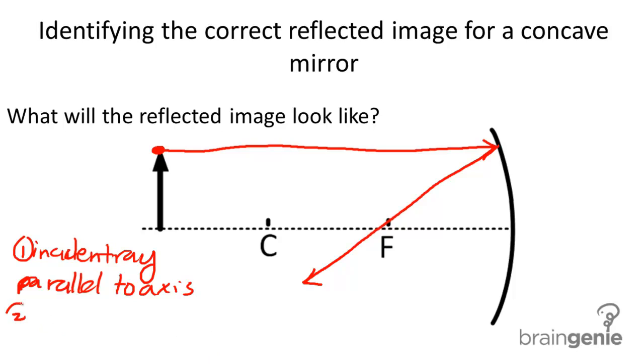Our second incident ray is going to be drawn, directed towards or through the focus. So, now we're going to draw a line connecting this point with this point, and it's going to be through the focus.